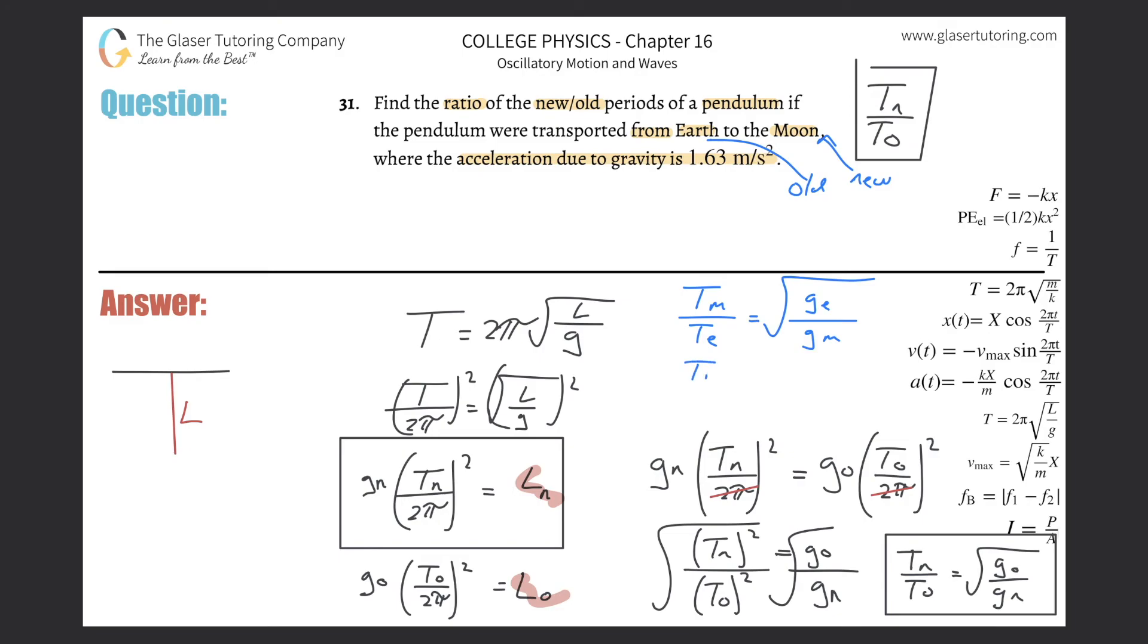So Tm over Te is going to be equal to the square root of 9.8 divided by 1.63. And let's find it. So square root, it would help if the calculator were on, square root of 9.8 divided by 1.63. And we get about 2.45. So 2.45. That's the ratio.